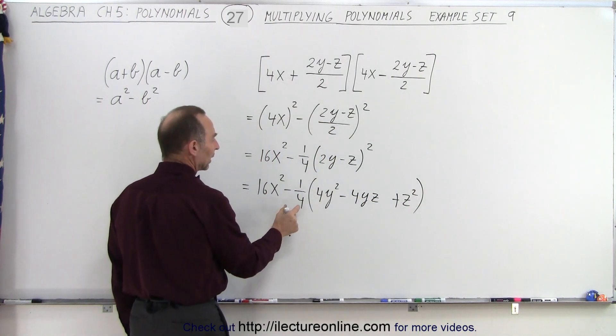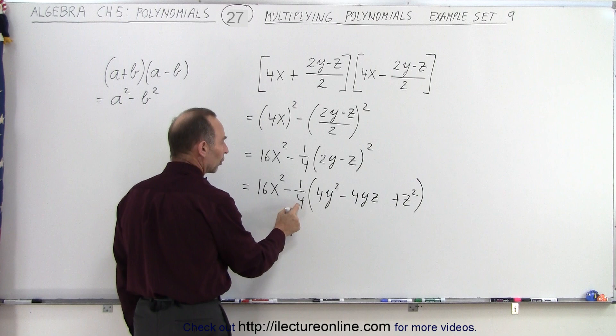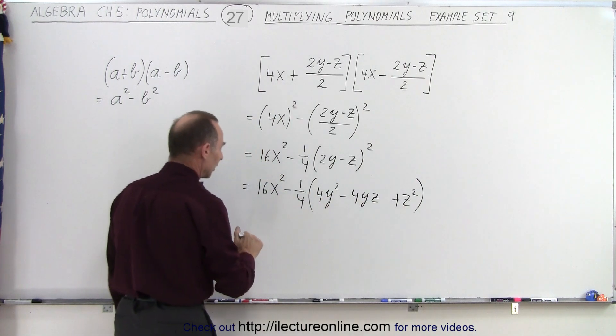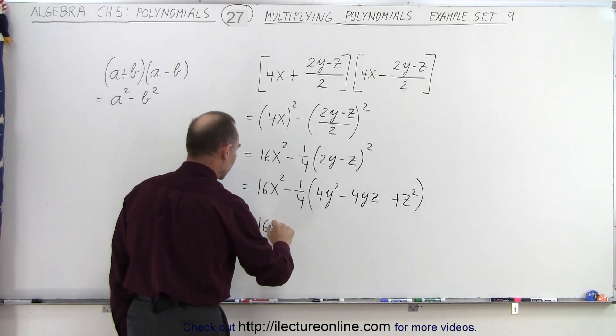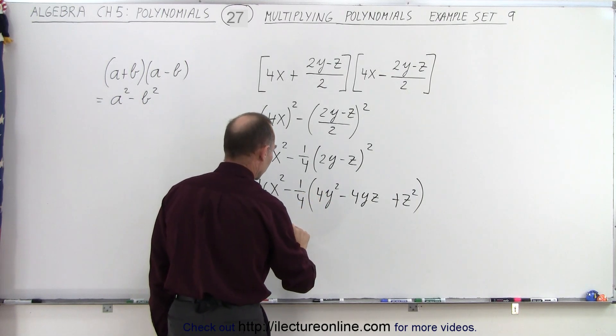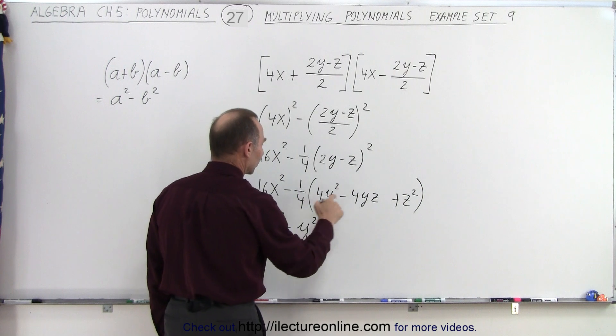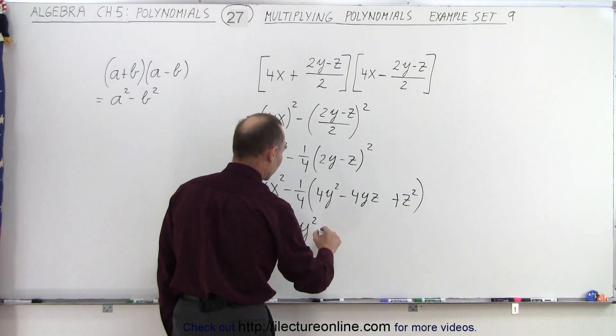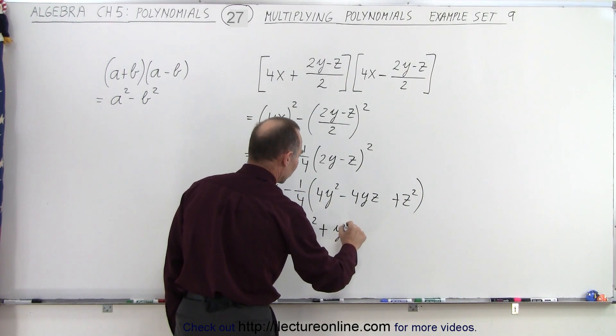And then I can multiply the minus 1 fourth with each term that's inside there. So this would be 16x squared. 1 fourth times 4, that's 1, so this becomes minus y squared. 1 fourth times 4 is 1, but a minus times a minus is a plus,